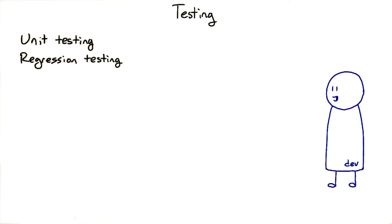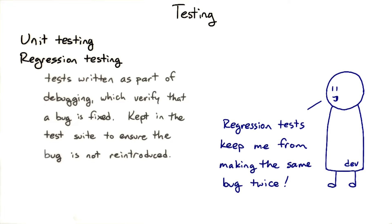Regression tests, on the other hand, get written as part of debugging and troubleshooting. Once you've fixed a bug, you want to make sure that it doesn't come back due to some future oversight — a regression. So you add a test that checks specifically for that particular bug. Like unit tests, regression tests are automated and run frequently.